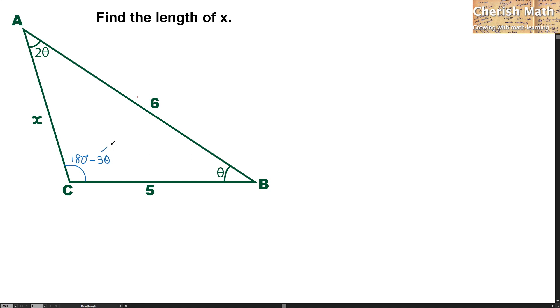From this diagram we know that 6 is opposite 180 degrees minus 3 theta, while 2 theta is the opposite of 5. And now we are using the sine rule to solve the problem. And this is how it goes.